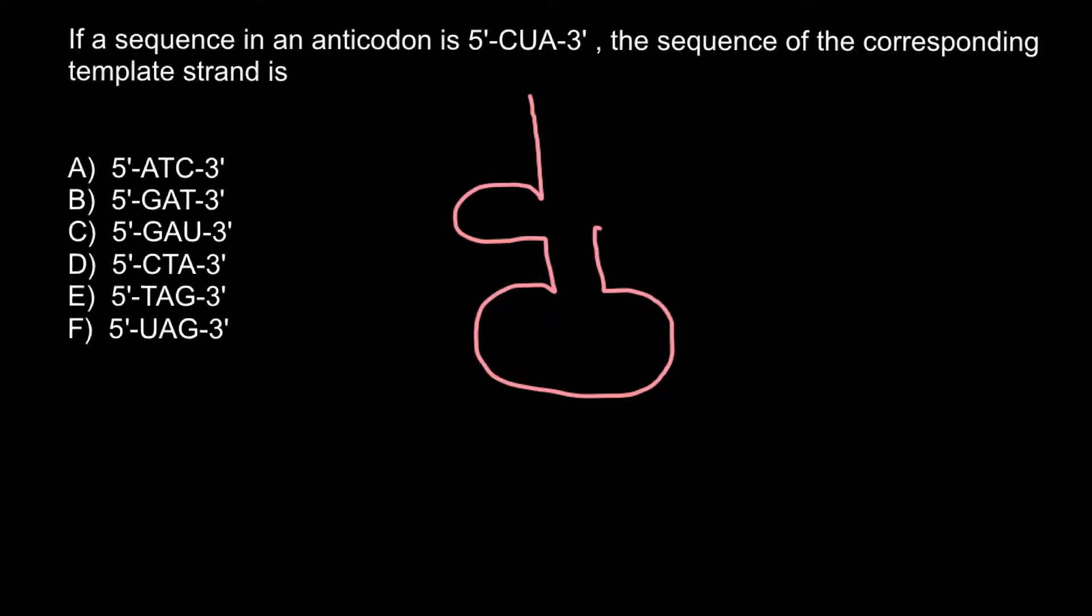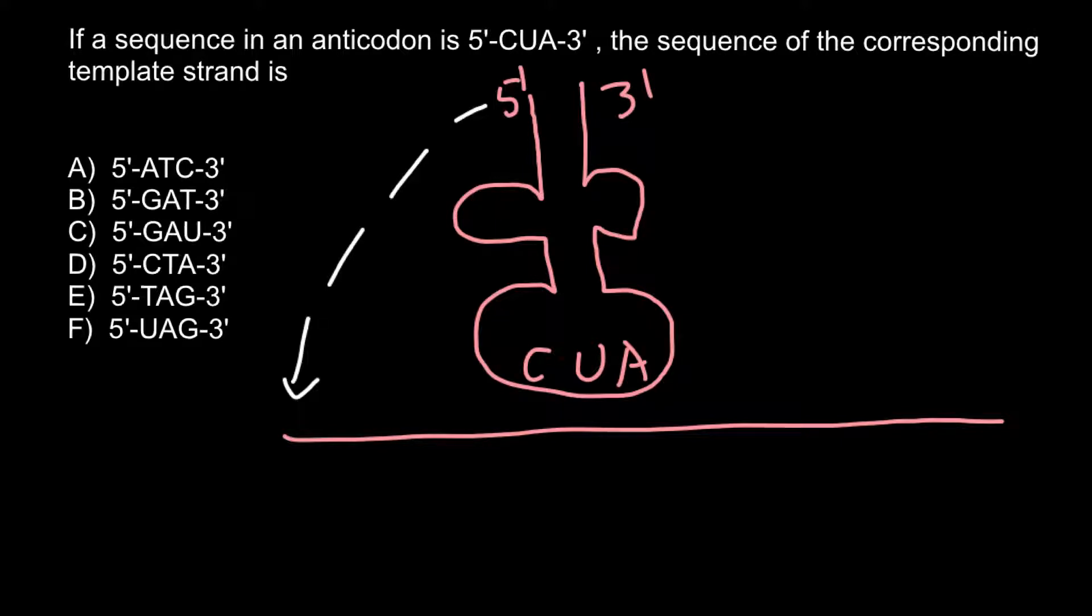Imagine now that this is tRNA with its cloverleaf structure. Here we have 5-prime and 3-prime ends, and the sequence is going to be CUA. This is going to be the anticodon, and the codon would be the sequence of the messenger RNA.